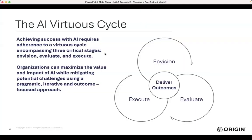All right, process. I love a good virtuous cycle. When I think about AI, it's all about three stages: envision, evaluate, execute. And from doing that, I believe you're able to maximize value, mitigate risks, and deliver outcomes. Outputs don't always give outcomes, but if you focus on delivering outcomes and use this three-step process, that is what I believe is the key to being successful.